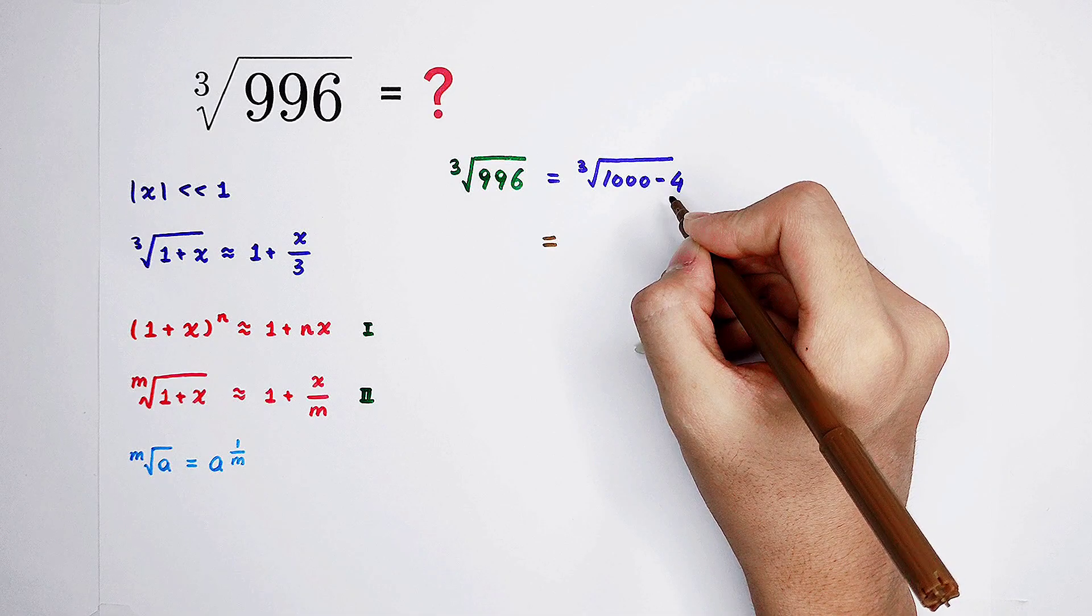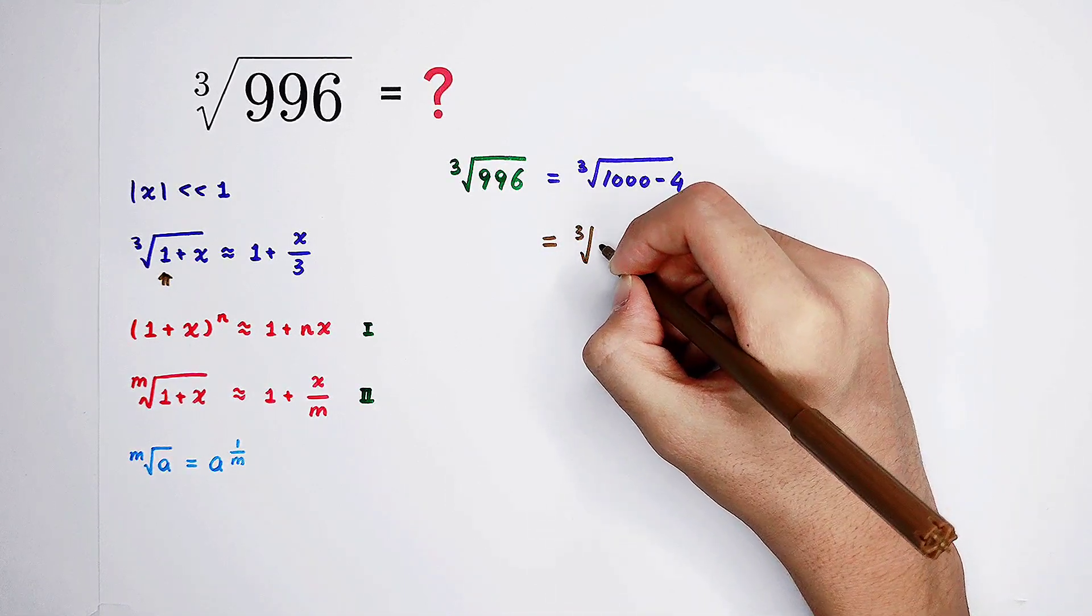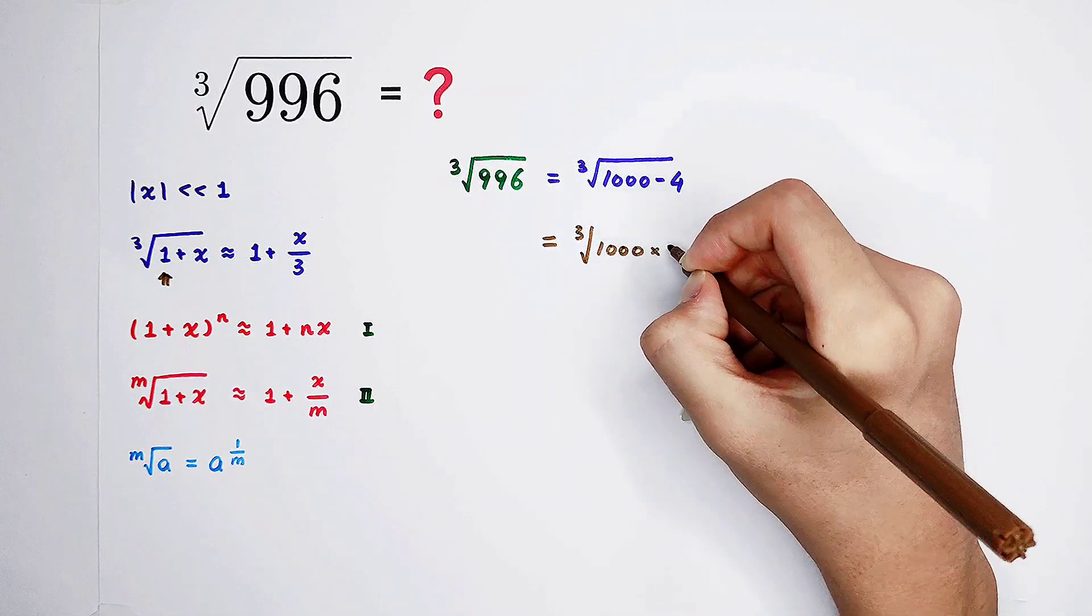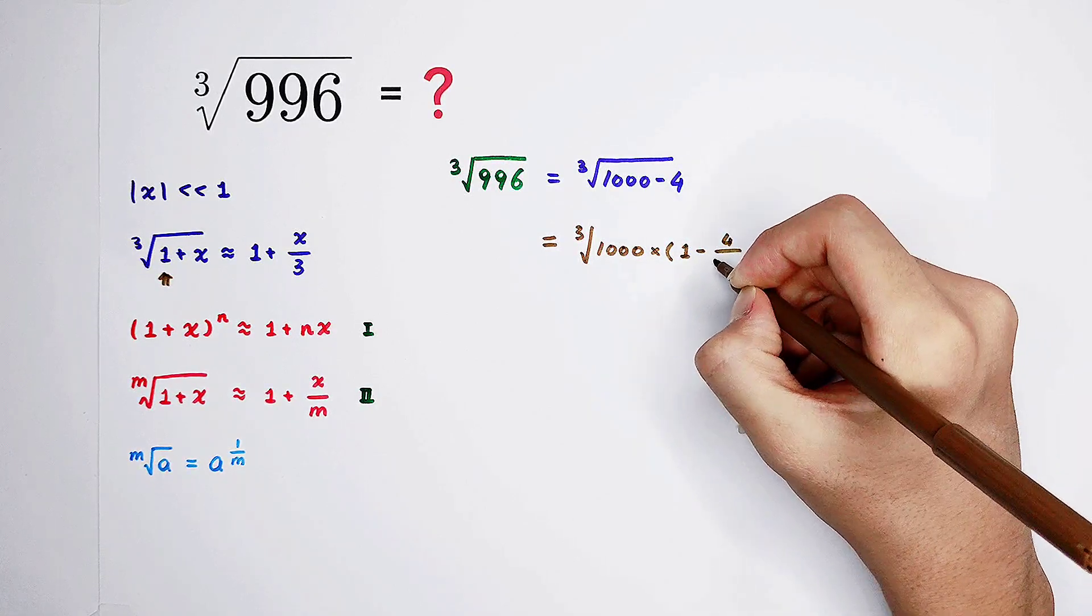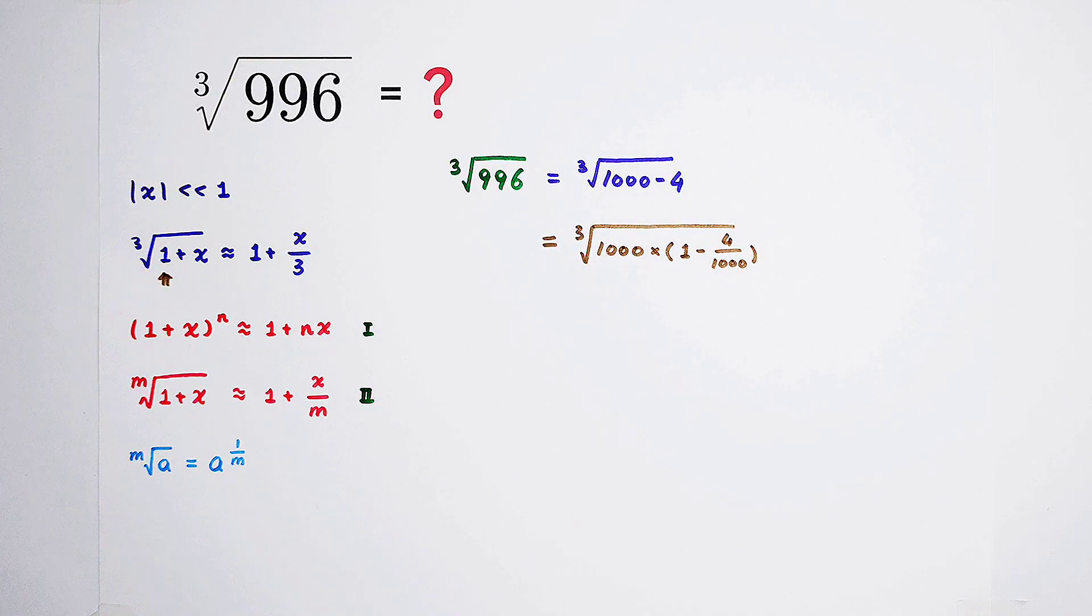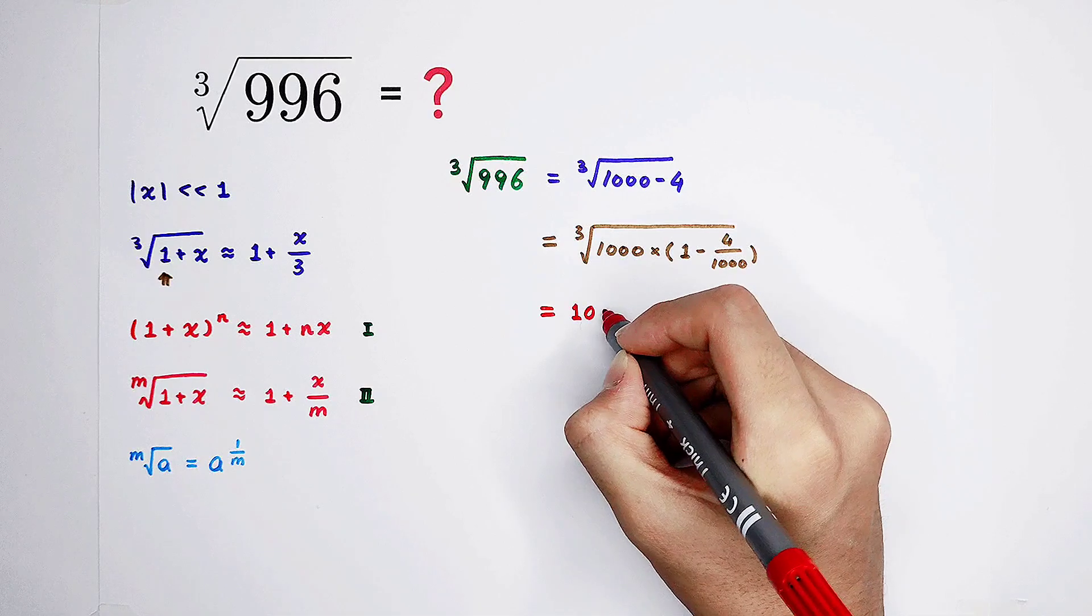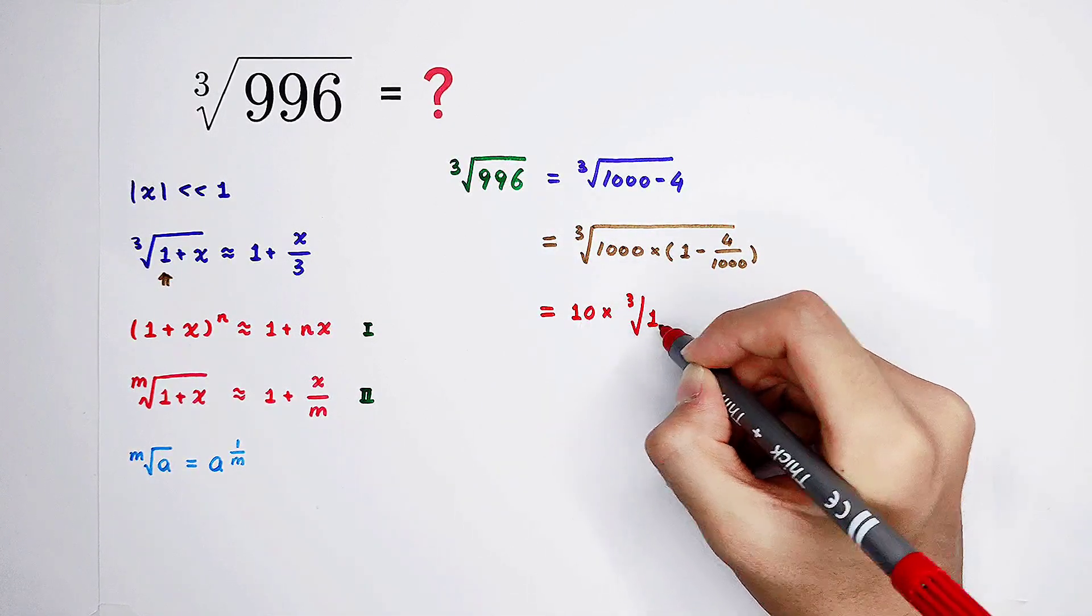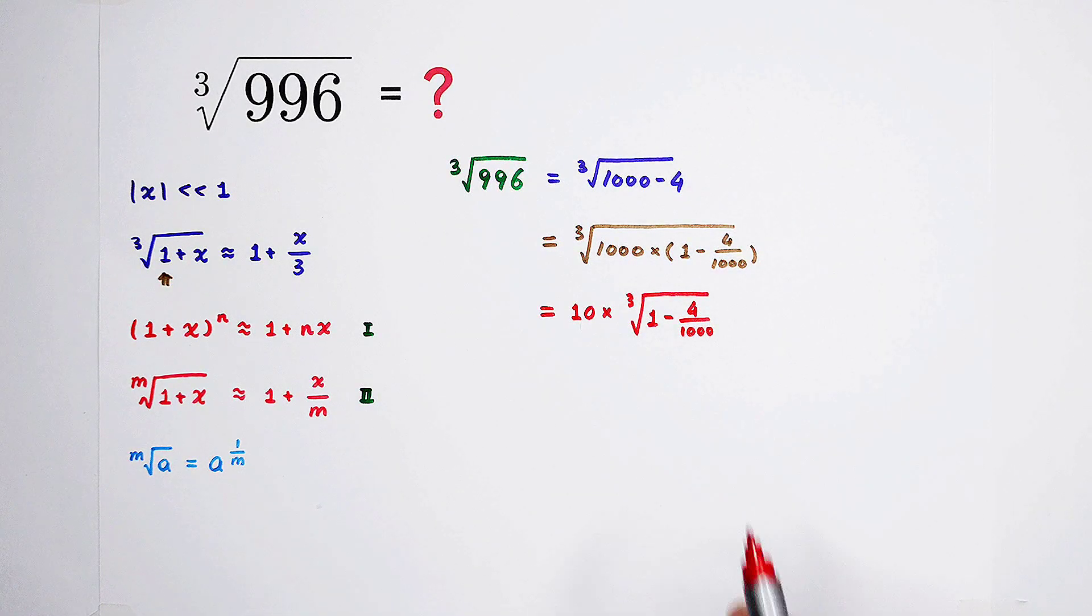Look, here is 1,000 minus 4. But we need a 1. So now, I'm going to take out a 10 under the root. So, here will be 1, and here is minus 4 over 1,000. That's going to be our new root. Because we know that 1,000 is 10 cubed. So, it is equal to 10 times the cube root of 1 minus 4 over 1,000. Of course, 4 over 1,000 is 1 over 250. So now, we can approximate this part.